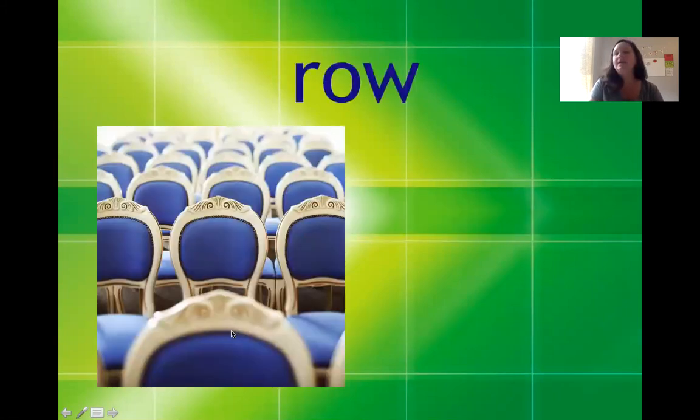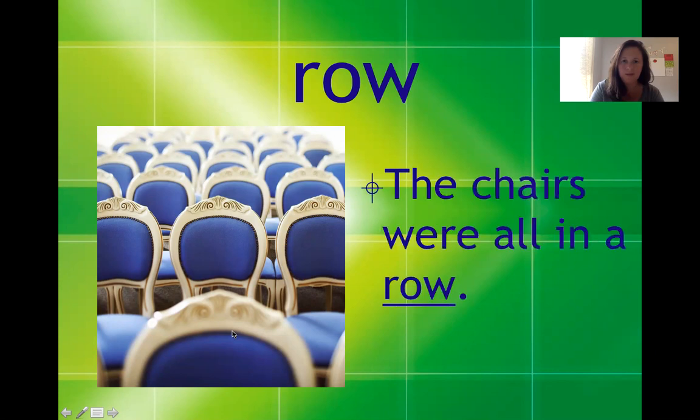So today's first word is row and here we have a picture that's going to help us figure out what the word row means. We're also going to use the context clues: the chairs were all in a row to figure out what row means. Row means the number of people or things arranged in a line. So here you could see a row of chairs.